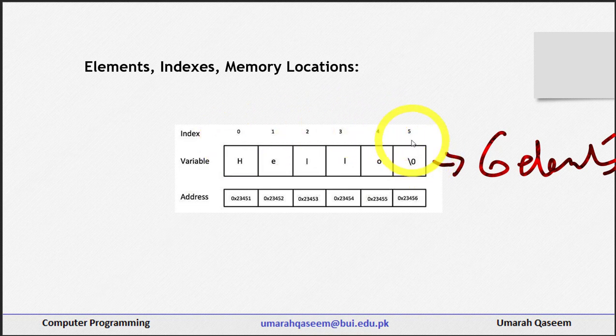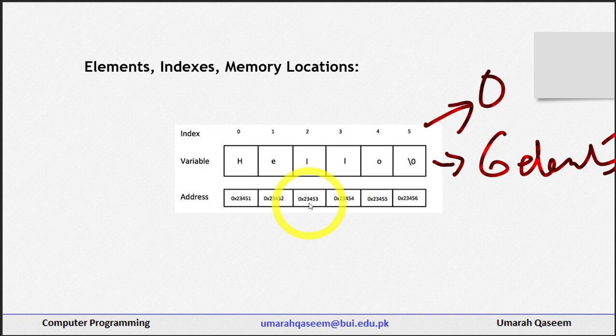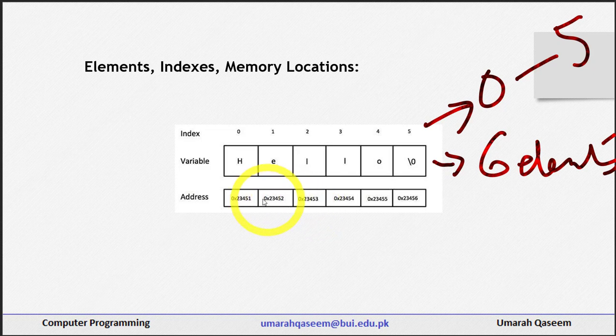So this array has indexes starting from zero and going up till index five. Now let's discuss the memory locations. What is a memory location? Obviously, the addresses at which this array is stored.